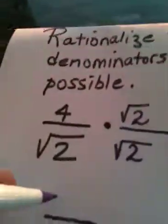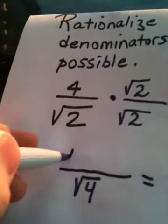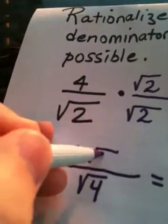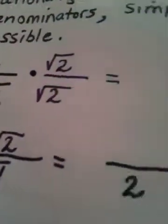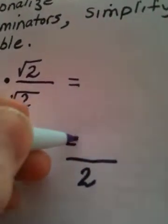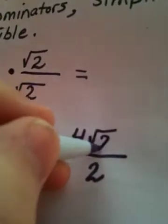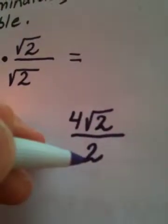Now in the top, 4 times the square root of 2 is just 4 times the square root of 2. So when I come over here, I have 4 times the square root of 2 in the numerator, I have 2 in the denominator.